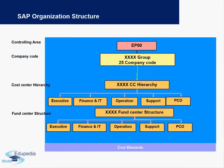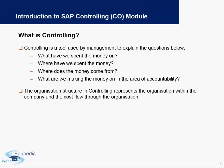This is how the SAP organization structure looks from a Controlling point of view as well. You not only have the Controlling Area and the Company Code, but you also have the Cost Center Hierarchy and the Fund Structure. The Fund Center structure gives you details like which category expenses are to be segregated into — you will have different fund center structures for Finance, Operations, Support, and so forth.